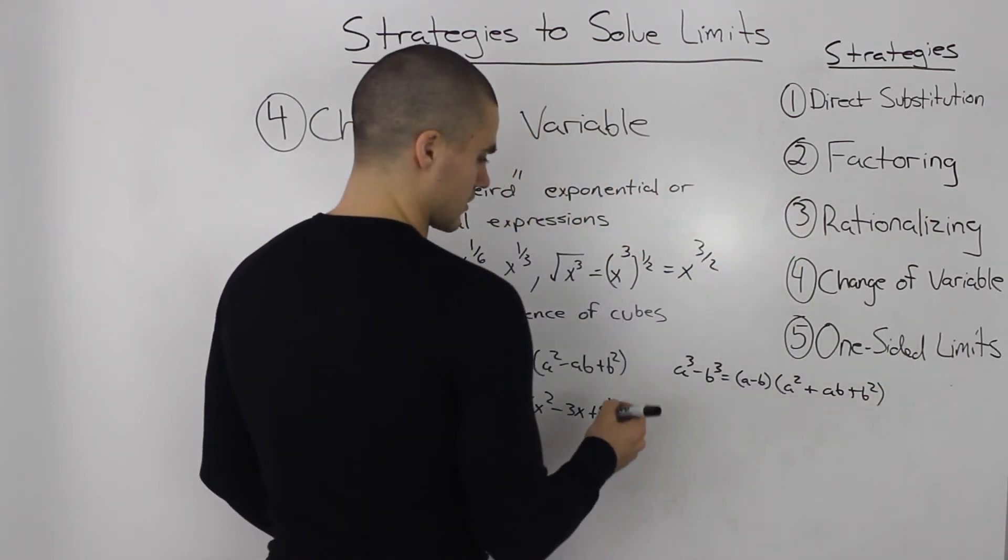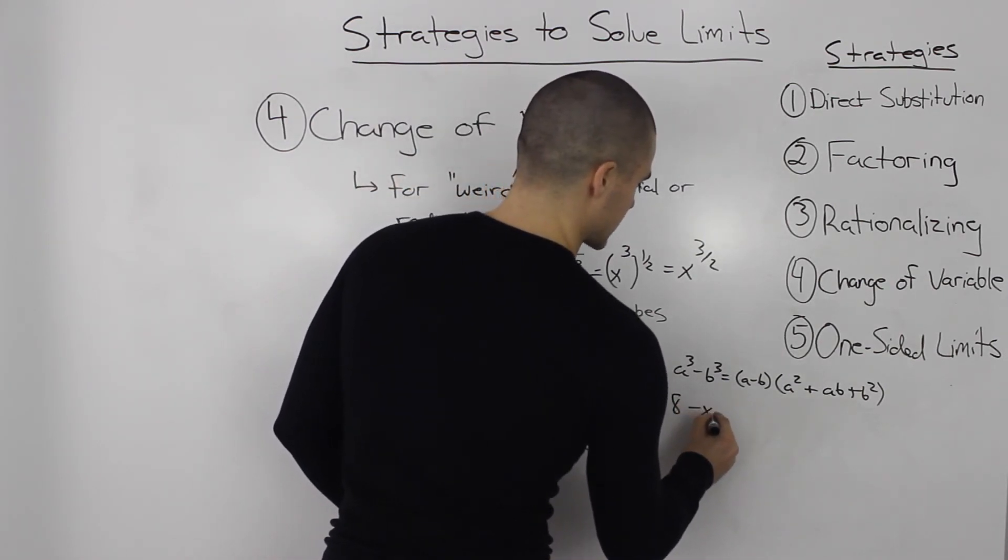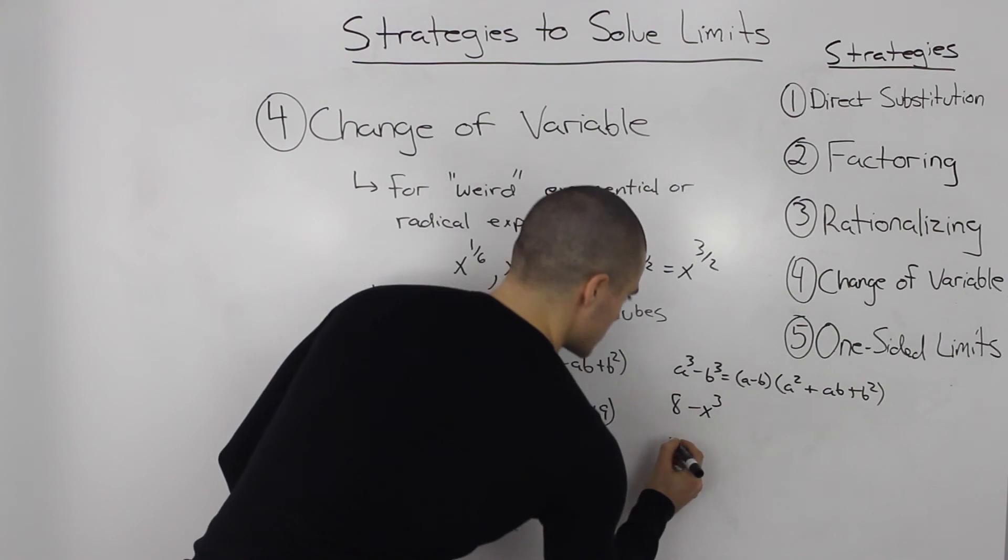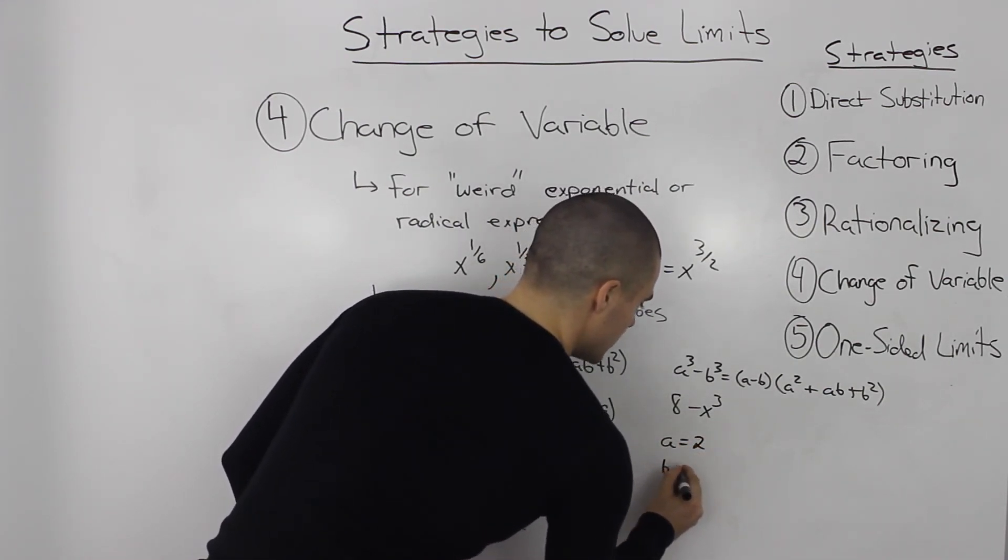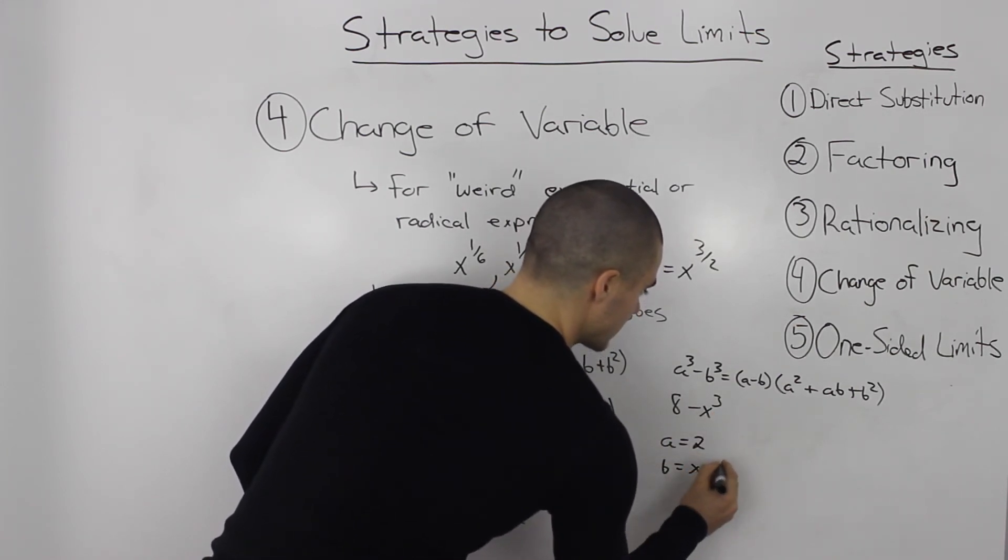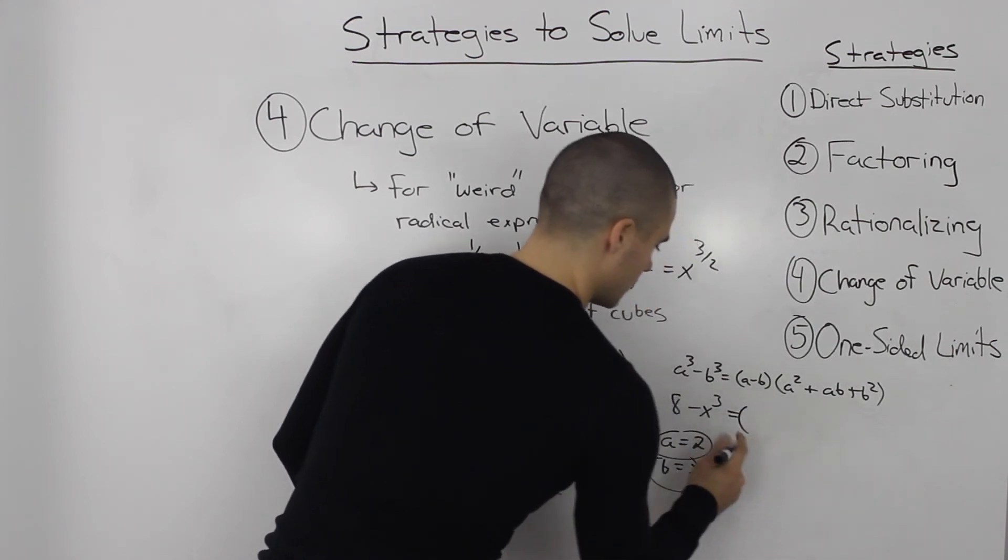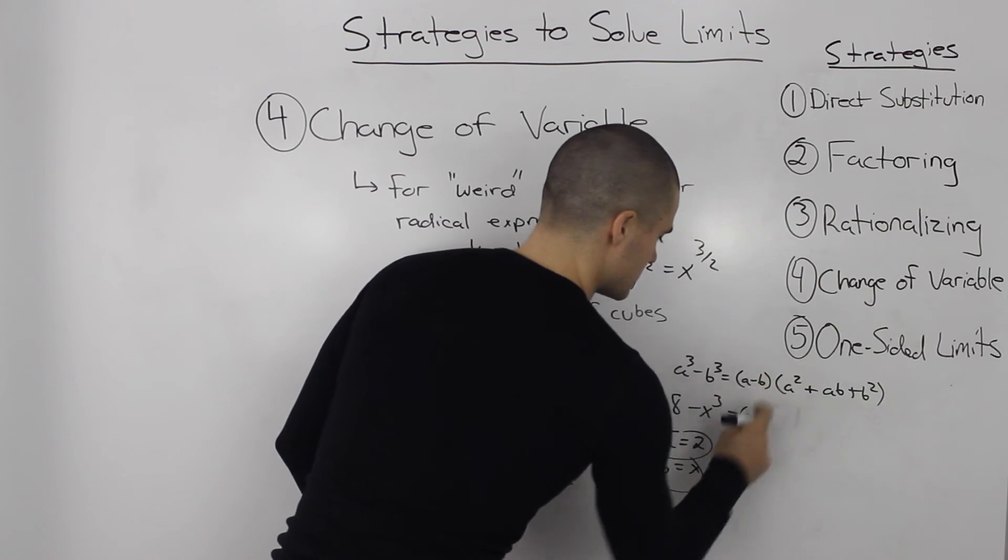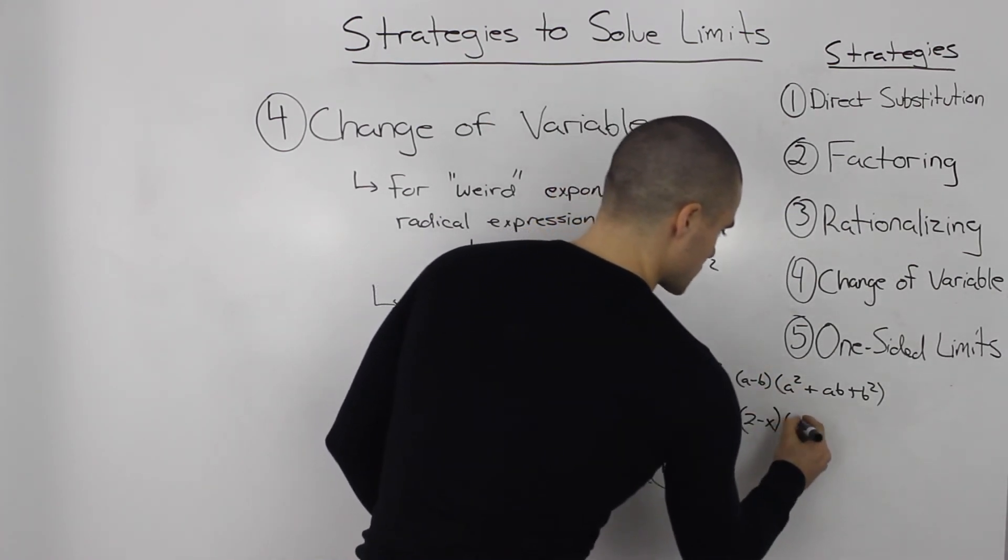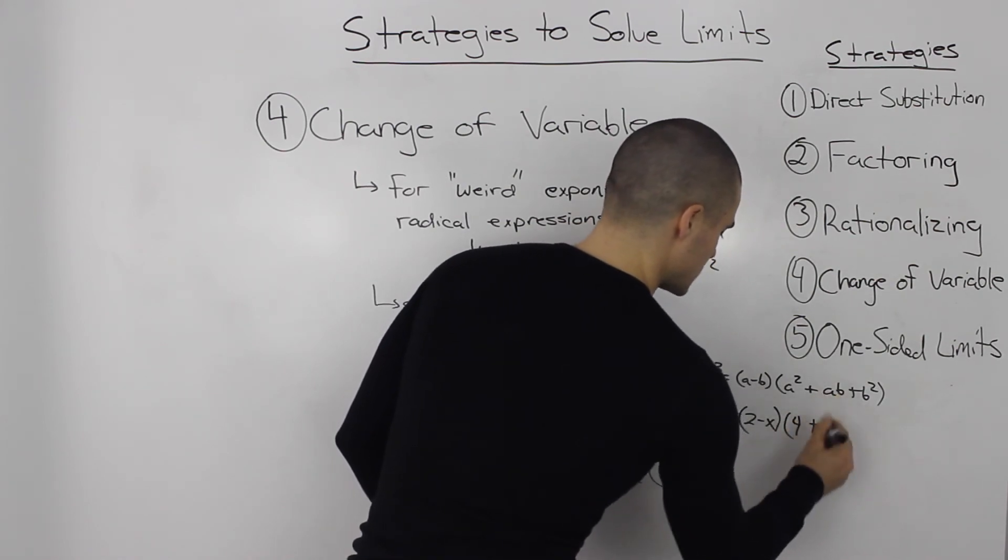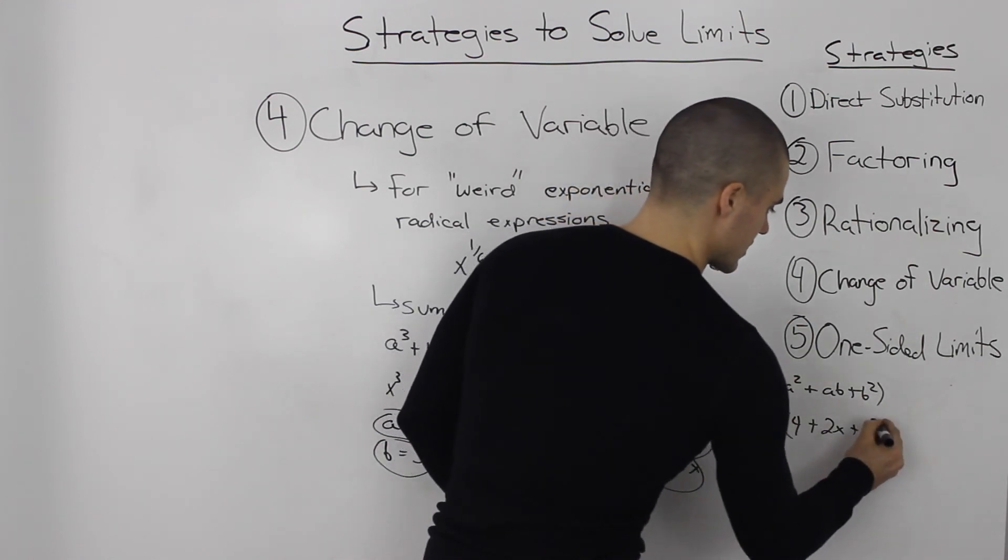And let's say you're given something like 8 minus x cubed. So in this case, our a value is the third root of 8, which is 2. Our b value is the third root of x cubed, which is x. So plugging these into our formula, we get 2 minus x times 2 squared is 4, plus 2x, plus x squared.